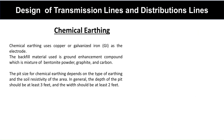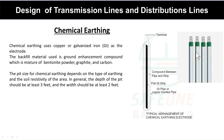Chemical earthing uses copper or galvanized iron as the earthing electrode. The backfill material used is a ground enhancement compound, which is a mixture of bentonite powder, graphite, and carbon. The pit size depends on the type of earthing and soil resistivity — the depth should be at least 3 feet and the width at least 2 feet. The chemical earthing electrode consists of two parts: an outer GI pipe or copper-bonded pipe, and a flat GI strip, with a conductive compound between the pipe and strip.